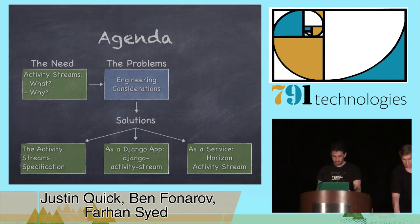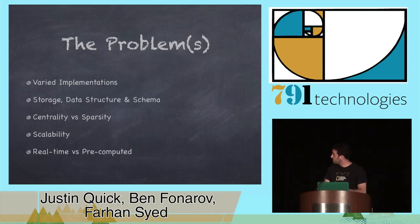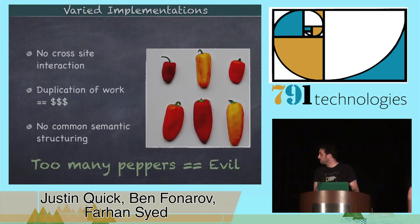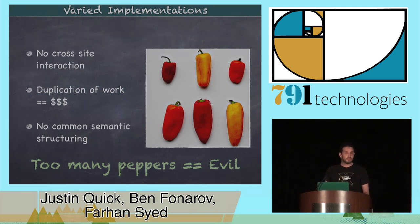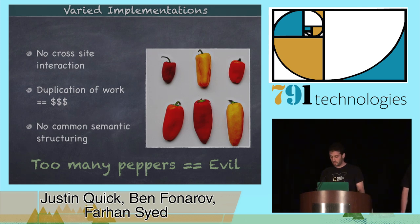So these are just some of the problems presented with activity streams. There are no great solutions — it's not a simple, clear-cut answer. It's all about weighing the benefits of each. The first problem is too many implementations. There are so many implementations of activity streams out there, and that's kind of evil. We don't really get the benefit of cross-site implementation. It would be great if I could do an activity on Facebook or somewhere else and get that same thing at National Geographic. It causes duplication of work, and there's no common semantic structuring.